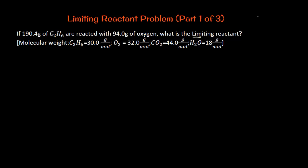So how are we going to calculate a limiting reactant based on the fact that we're given two individual reactants? We're given that we are reacting 190.4 grams of C2H6 with 94.0 grams of oxygen.